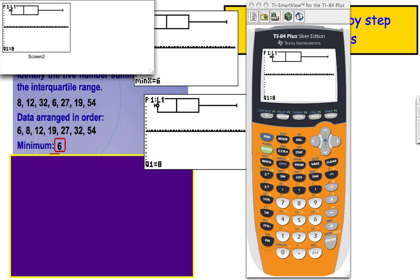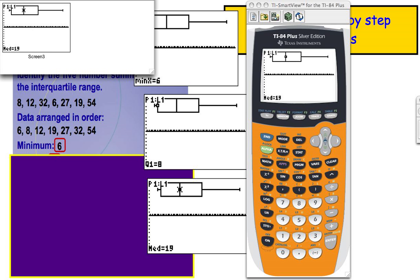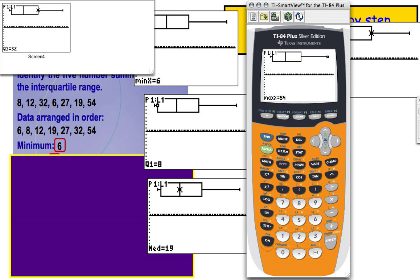We can arrow over one more time, and we can see that our median is at 19. And you don't have to take pictures like I'm doing right here. I'm just doing this so that we can keep the data on the screen. We can see that our Q3 is 32. And last but not least, we can see that our maximum is 54.